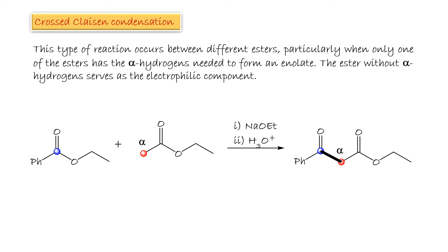Crossed Claisen Condensation. This type of reaction occurs between two different esters, particularly when one of the esters has the alpha hydrogen needed to form the enolate and the other does not. The ester without alpha hydrogen serves as the electrophilic component.